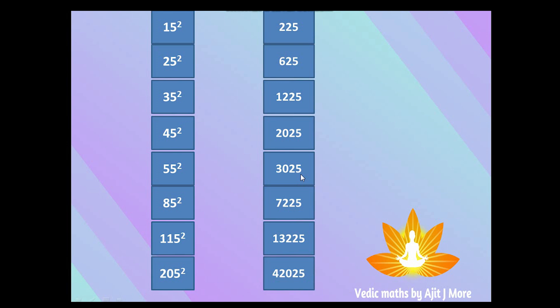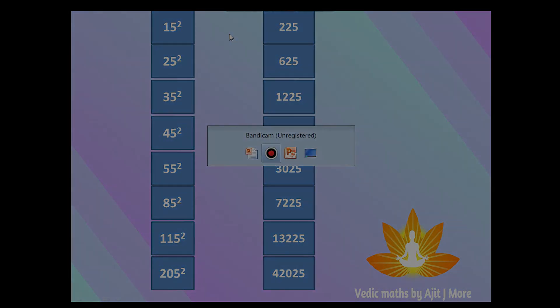Just to wind up: whenever we want to find the square of a number ending with 5, it will have two parts. The first part is the multiplication of the digit before 5 with its consecutive digit, and the second part is always 5 squared, that is 25. Hope you've understood — any doubts please comment below. See you in the next session with one more Vedic math trick. Keep learning, keep evolving. Thank you, God bless you.